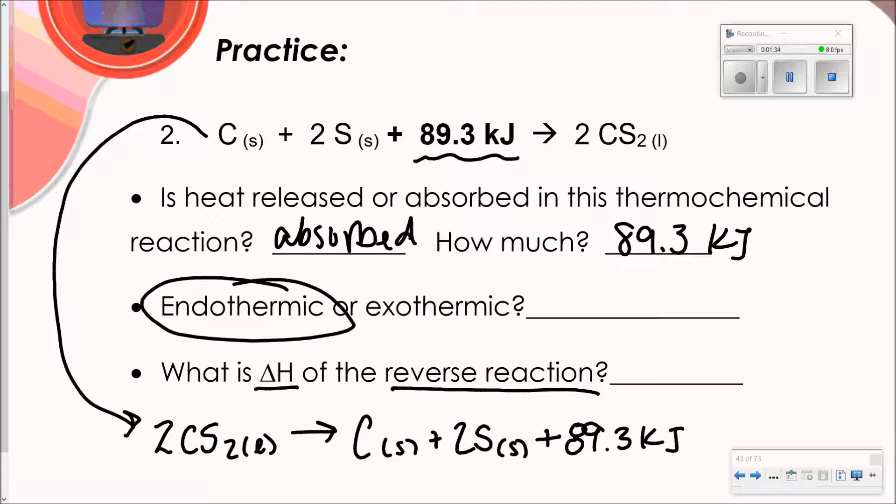Those are only when you've taken that value and you've taken it out of the equation. So for example, if I was going to write the change in enthalpy for this, I would write change in H equals negative 89.3. If it's in the equation, it's not negative or positive.